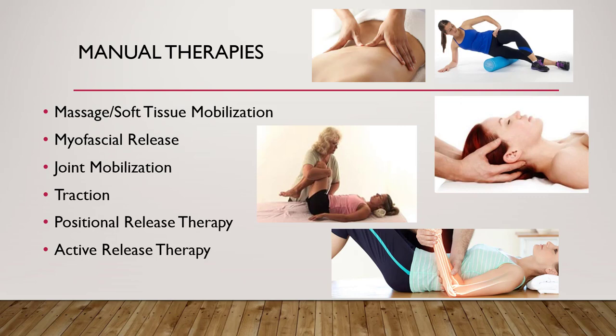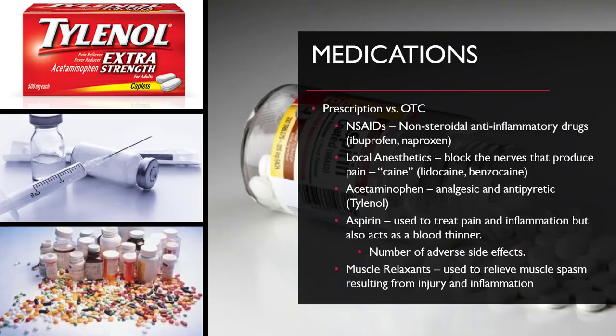Joint mobilization is utilized for both pain management and to increase range of motion. Traction is the pulling of tissues within a controlled environment to reduce pain. Positional release involves finding areas of pain and helping patients find positions that release the pain, applying pressure to painful areas and then releasing. Active release is very similar to positional release, except instead of having the patient relax, the clinician has the patient contract while applying pressure to the painful areas and then releasing.